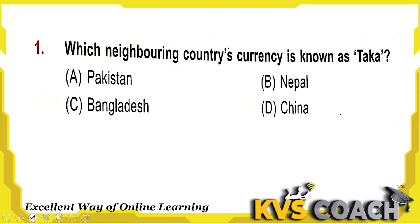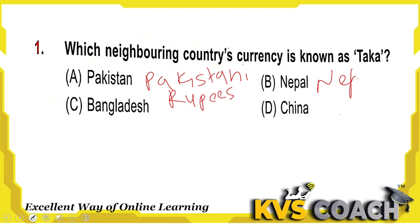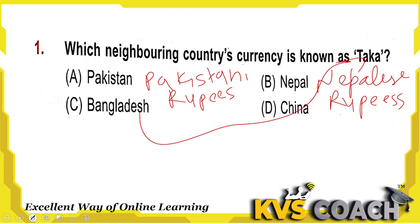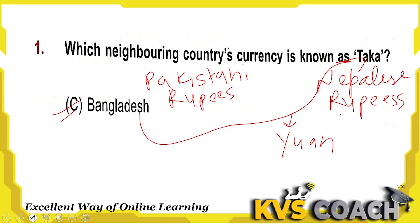First question: which neighboring country's currency is known as Taka? Pakistani currency is Pakistani rupees. Nepal's currency is Nepalese rupees. Bangladesh's currency is Taka. And China's currency is Yuan. So the right answer is option C — Taka is the currency of Bangladesh.